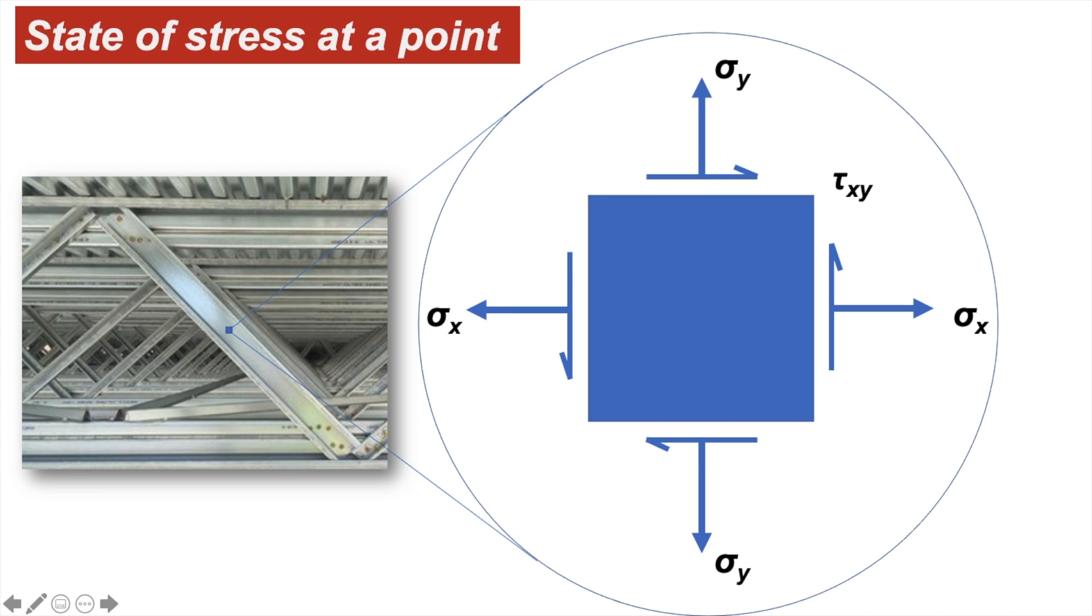We can see that we have three unique unknowns or three unique stresses: two normal and one shear. They are called sigma x, sigma y, and tau xy.